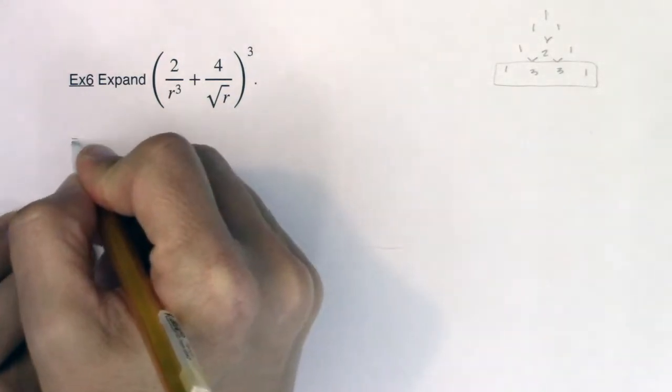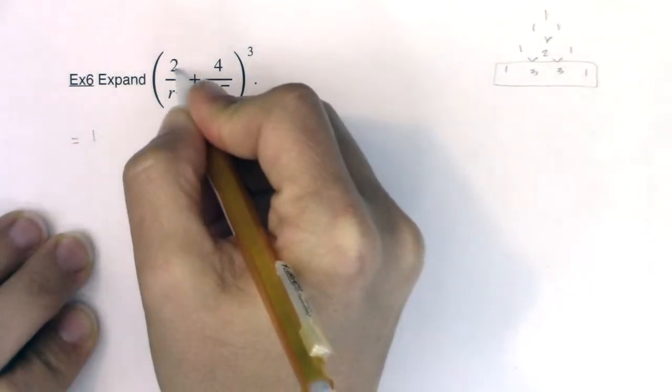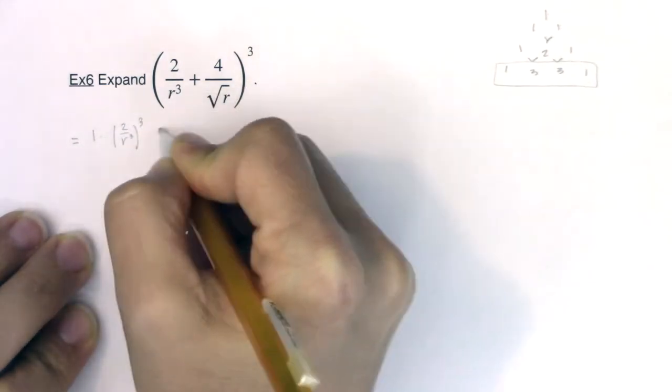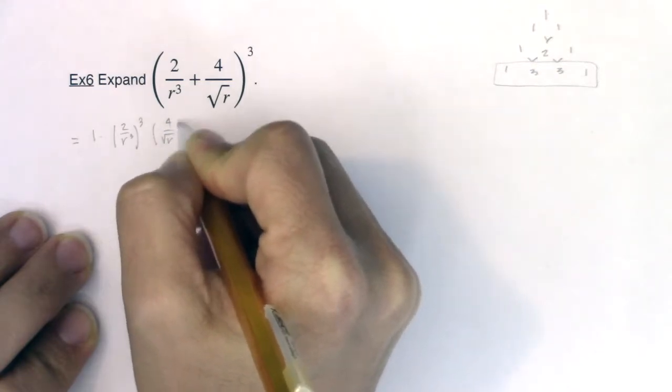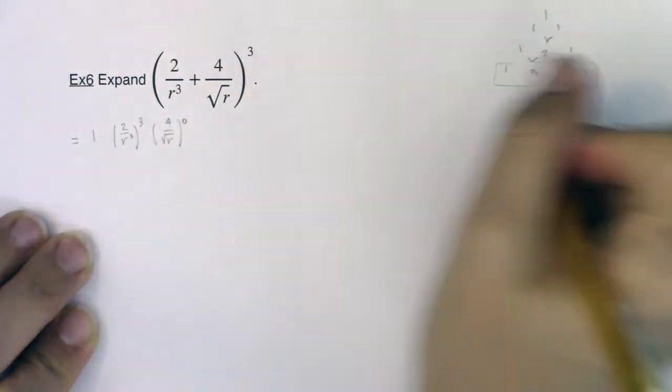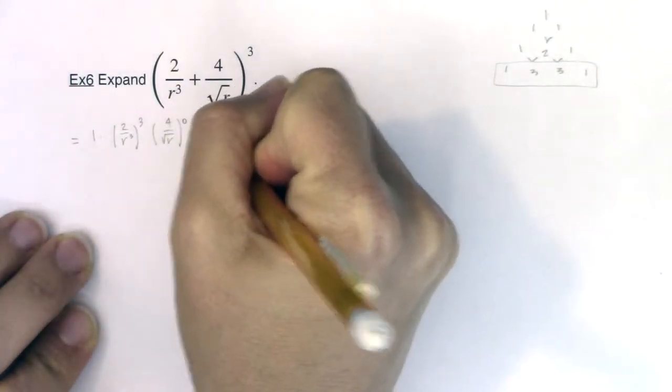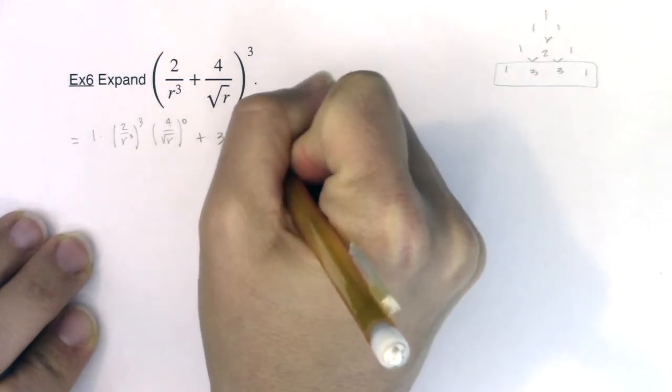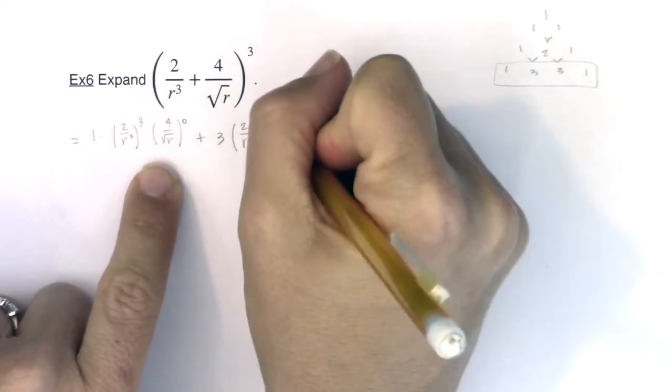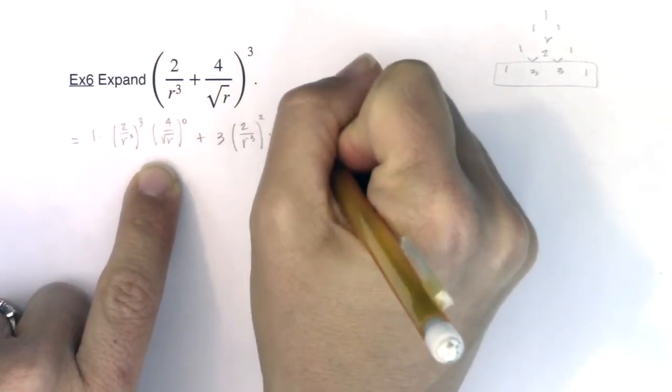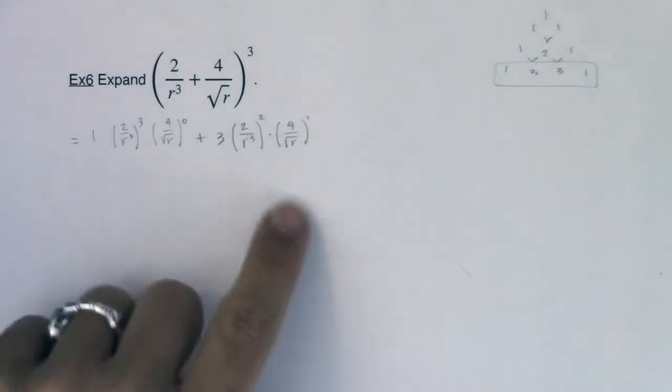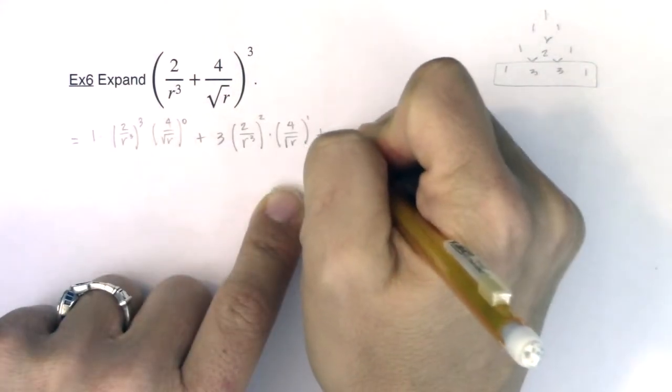So when I expand this, my first coefficient is 1 and I'm going to have 2 over r cubed and then I'm going to have 4 over the square root of r to the 0. So even though these terms are much uglier to look at, I'm still using the binomial theorem in combination with Pascal's triangle.